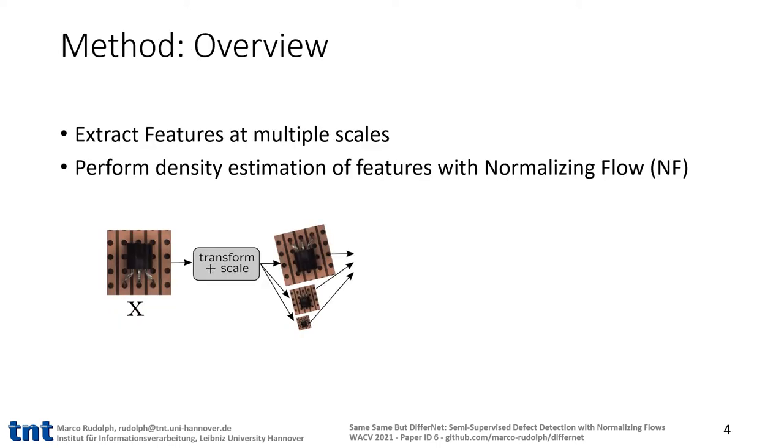This is an overview of our pipeline. An input image is randomly transformed, e.g. by rotation, and resized to three different scales. We use an ImageNet pre-trained model, here AlexNet, to extract features and concatenate the feature vectors of the three scales to get the vector y.